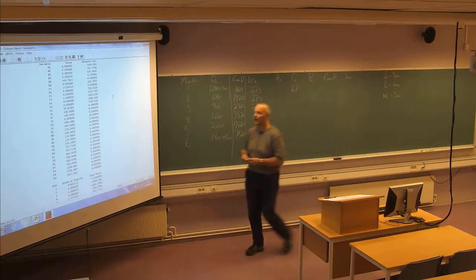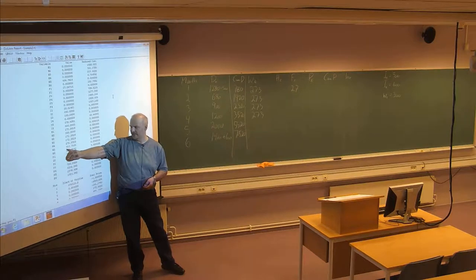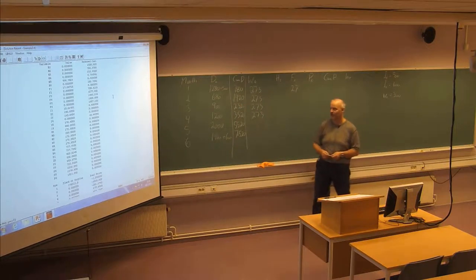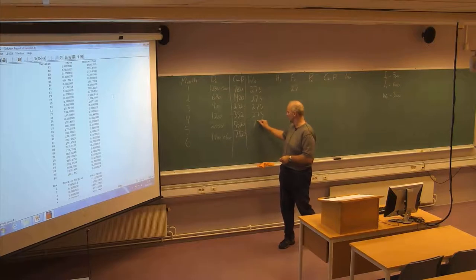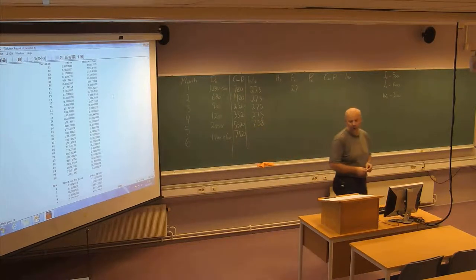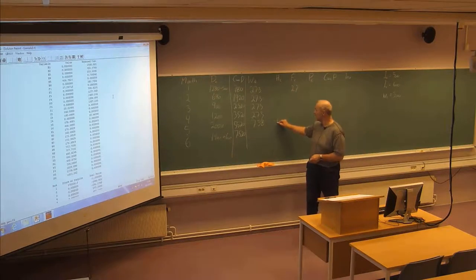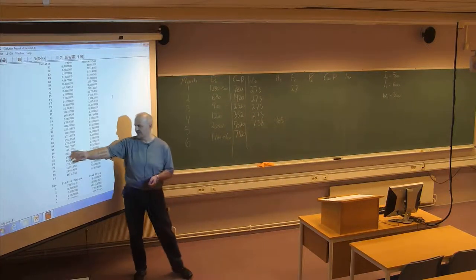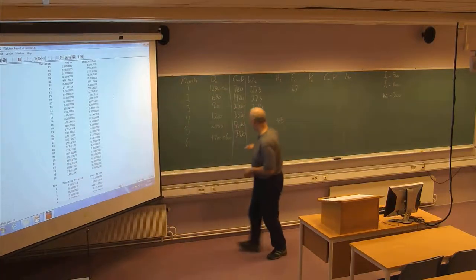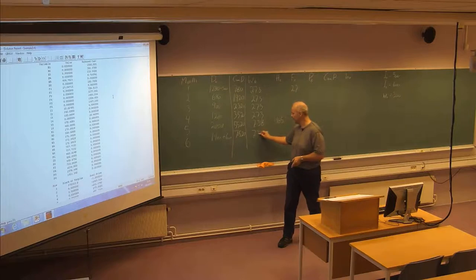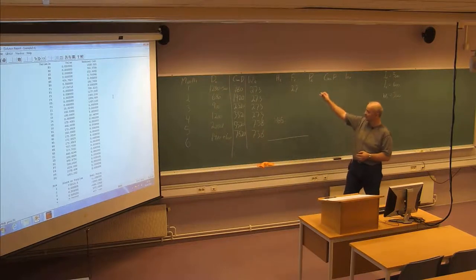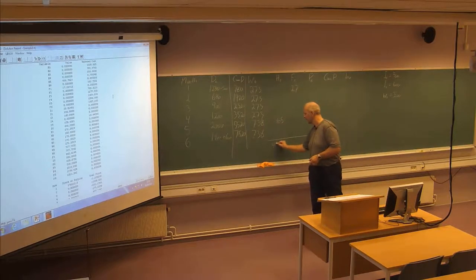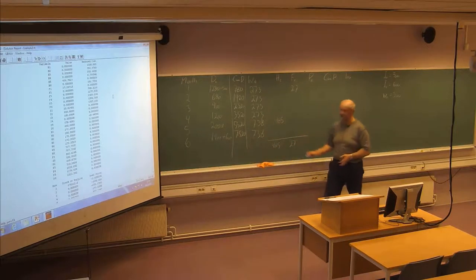In month number 5, the LP solution tells us to have 737.73, which means that we have to round upwards to 738. That means we need to hire 465 in May. This will also be the situation in month number 6, 738. No changes from month 5 to 6. So this strategy will give us 465 hiring and 27 firing during this 6-month period.